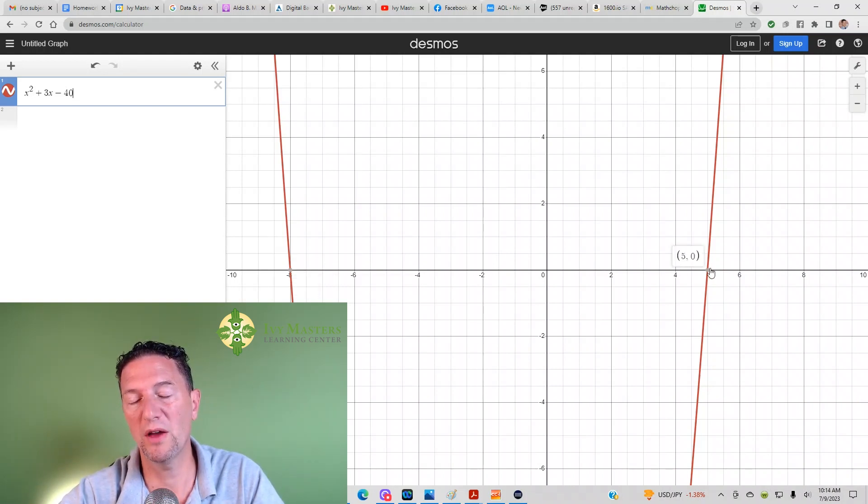And then if 5, 0 is a point on the parabola, that's the other x-intercept. It's got to be x minus 5. For that, you need to know that it's opposite opposite. So we're looking for x plus 8, x minus 5.